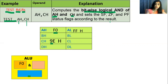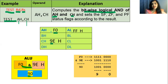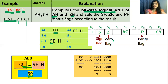Let's see how it works with F0 and 9E. Performing the logical AND operation between these two numbers gives a result of 90. This result will not get transferred into the destination register, unlike the AND instruction. In the AND instruction, this result would enter the destination, but in the TEST instruction it does not. It will, however, change the flags. Note that the 8086 has a 16-bit processor status word, but we are concerned only with these flag bits.